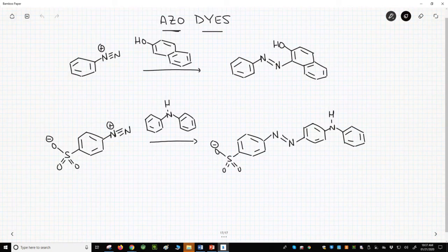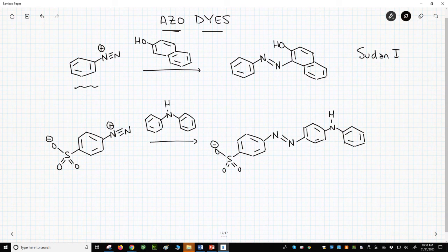Azo dyes are still widely used in textiles and even food. Two relatively simple dyes are shown on this slide. The top one is Sudan 1. It's a red dye made from the reaction of benzene diazonium ion and 2-hydroxynaphthalene.